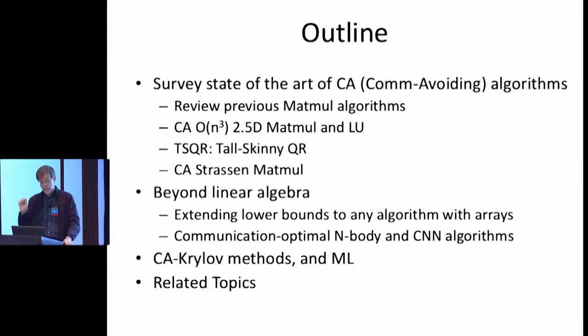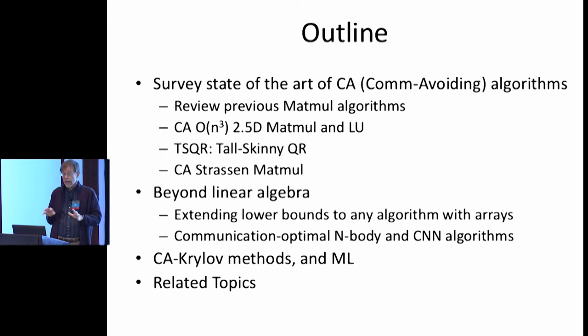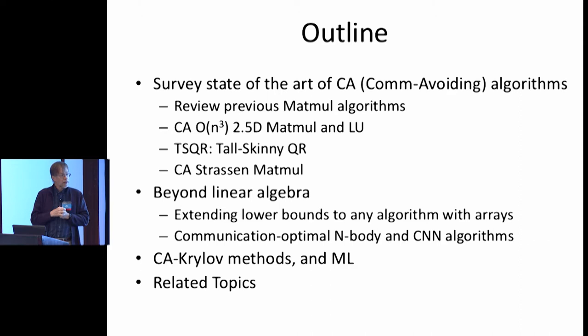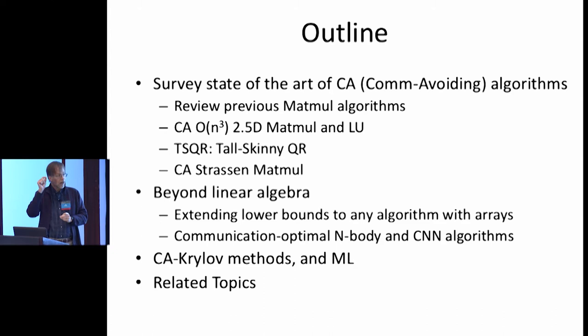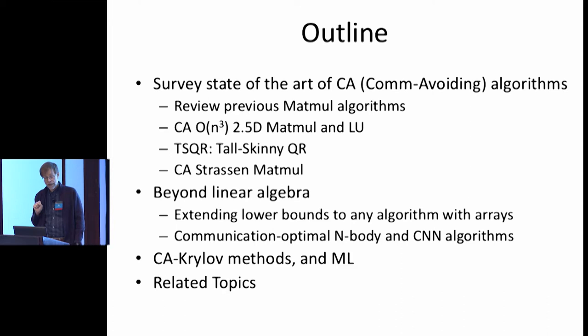Here's the outline of the talk. I'll give a survey of the state of the art of communication-avoiding algorithms. I'll review the previous matrix multiply algorithm, then tell you the idea to get the 12x speedup — the 2.5-dimensional matrix multiply. Then Tall Skinny QR and Strassen briefly. We've discovered these ideas extend to arbitrary code that looks like nested loops accessing arrays with linear combinations of loop indices, giving lower bounds and optimal algorithms for most code. Two examples: n-body code and neural nets. Then we move to Krylov subspace methods and machine learning.